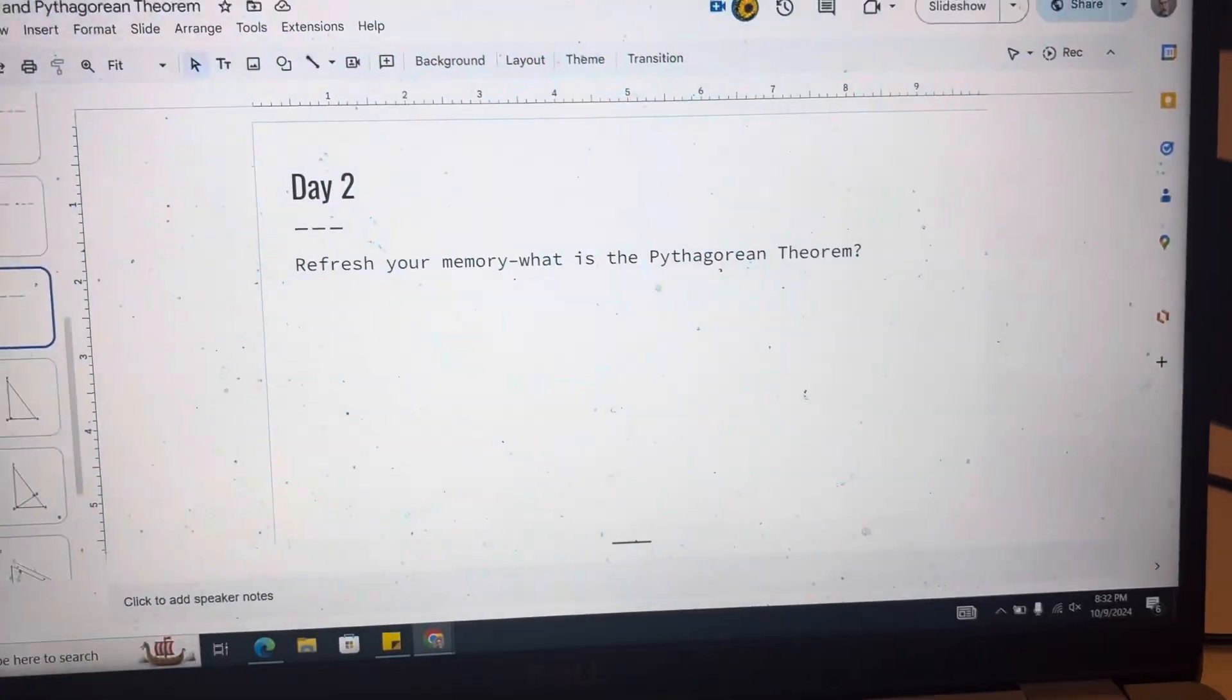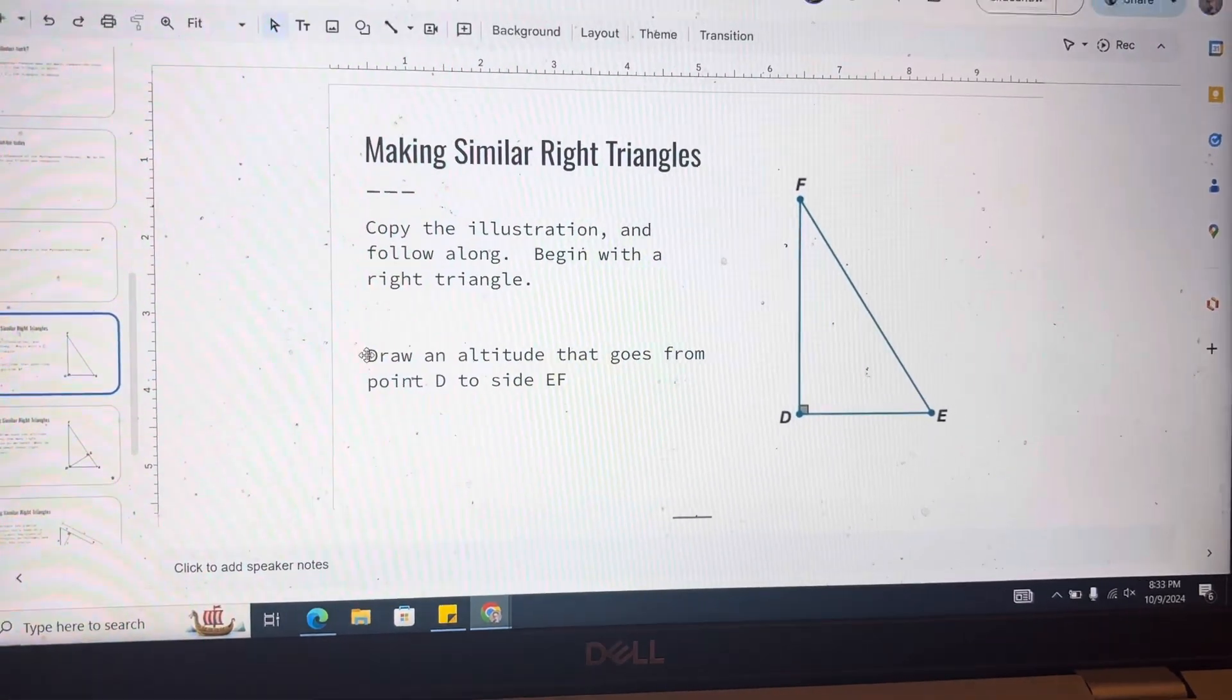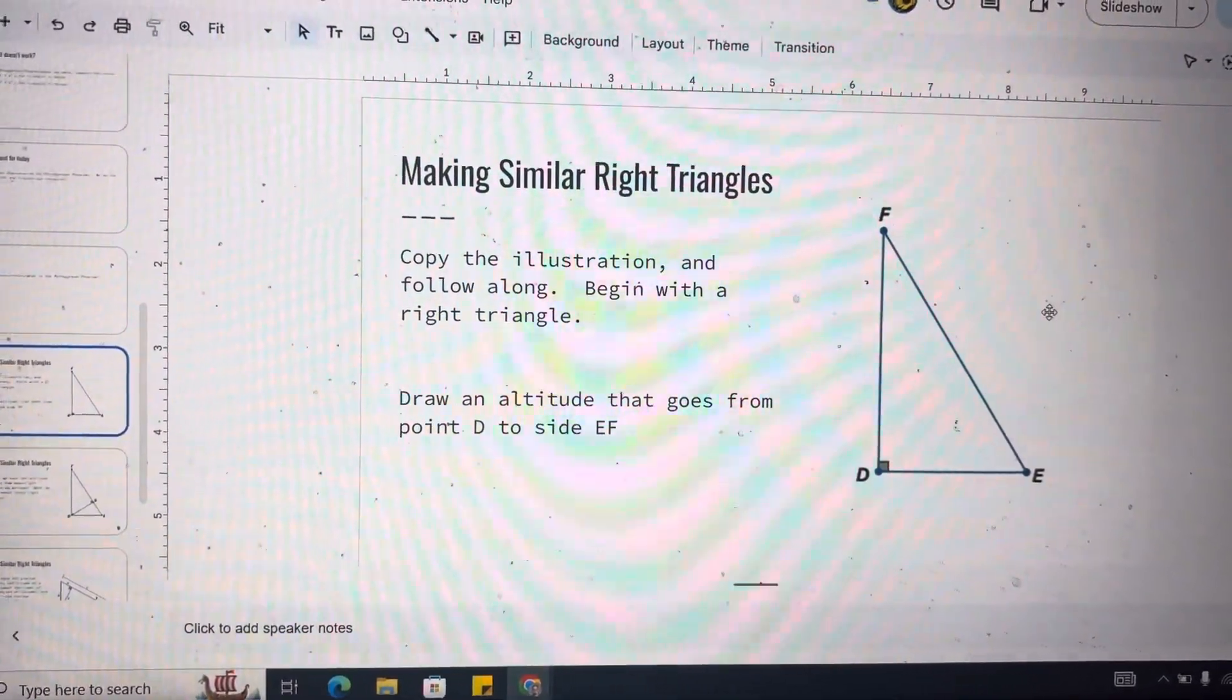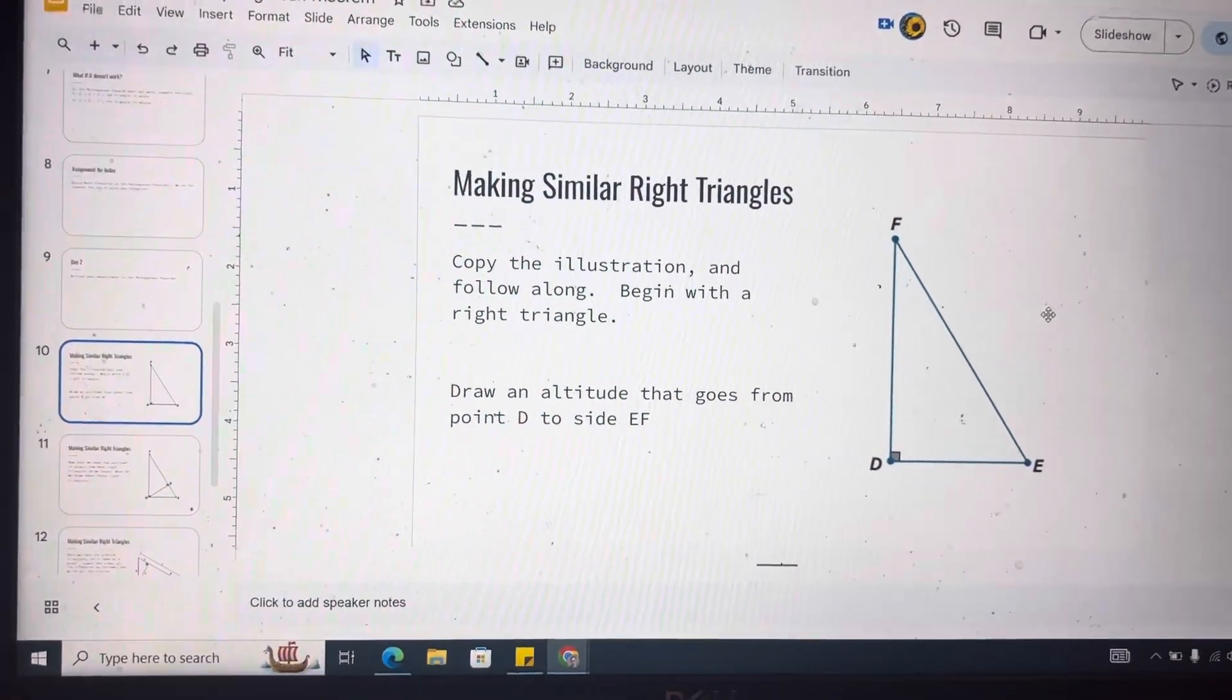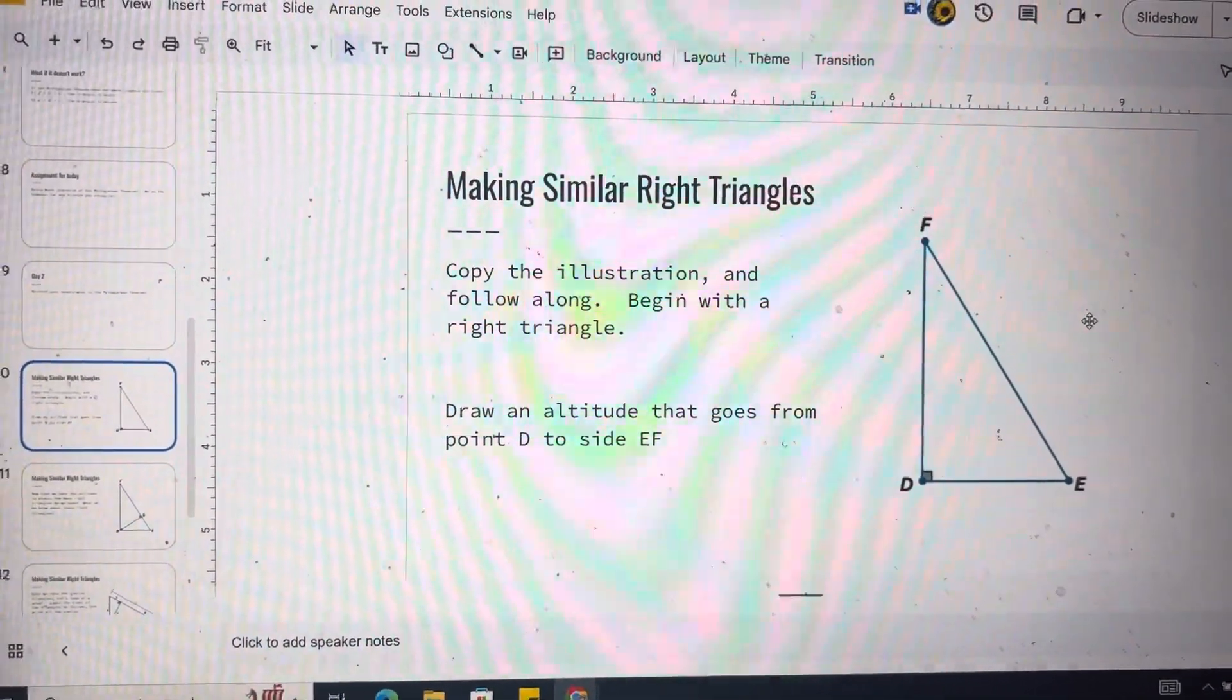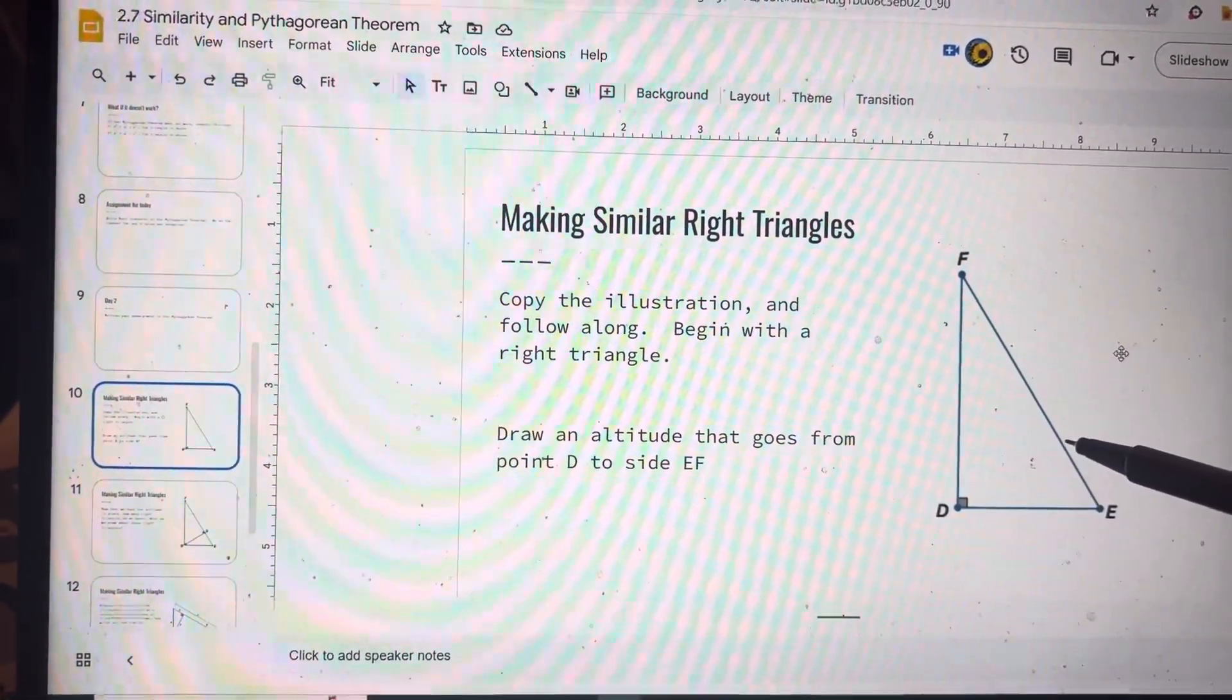So we are looking at making similar right triangles. We're going to copy this illustration. So we have this interesting thing that's going to happen here. And this is kind of weird that it came from College Board, and then they reworked everything. But we have this triangle here that's D, E, F. That is a right triangle.